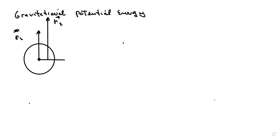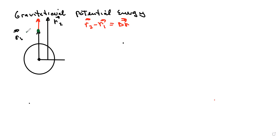So now we have this displacement right here, which is r2 minus r1, and we're going to call it delta r. Now we're going to place a little particle here of mass m.